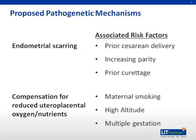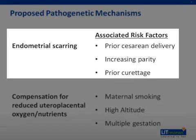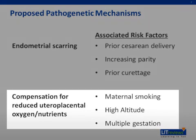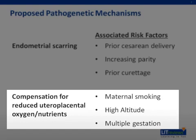Conditions that cause endometrial scarring increase the risk of placenta previa. Endometrial scarring may allow for trophoblastic invasion into the lower uterine segment. Risk factors for scarring include prior cesarean delivery, increasing parity, and prior curettage. Increasing demand for uteroplacental exchange is another proposed mechanism for previa, as this may result in the need for increasing placental surface area. Associated risk factors include maternal smoking, high altitude, and multiple gestation.